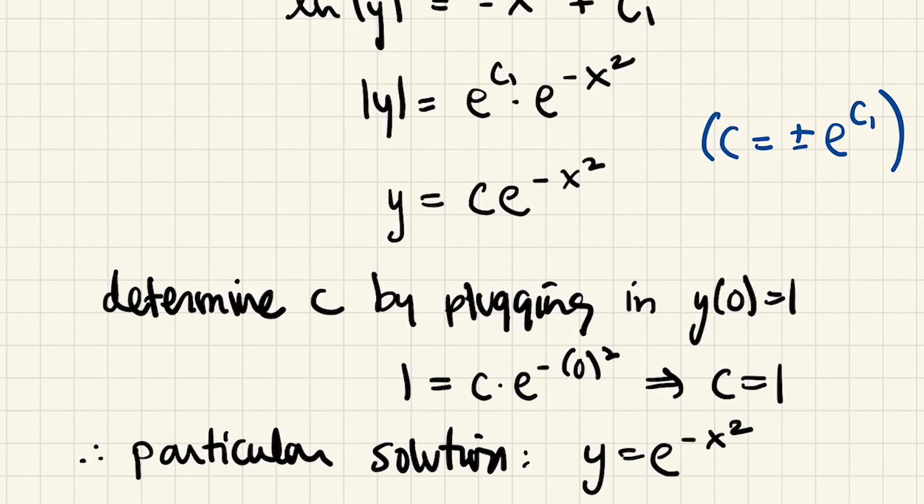So if we plug in 0.5, the question is how close is e^(-0.25), which is the square of that, equal to 0.813, etc. So I did the calculation, and I got that it was about a 4% difference. I think it's more impressive if we see it on Desmos.